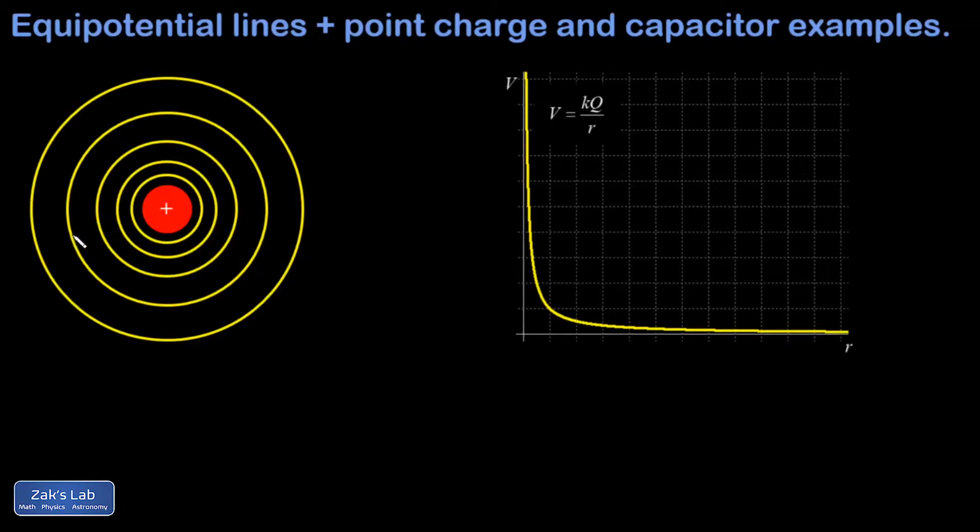So what is an equipotential line? An equipotential line is a contour along which the electric potential is constant. So on the left here, I've shown an isolated point charge along with its equipotential lines. I notice a couple things here. One, the equipotential lines are concentric circles.